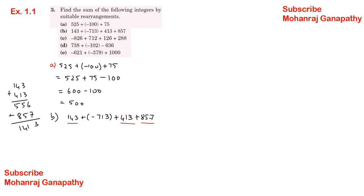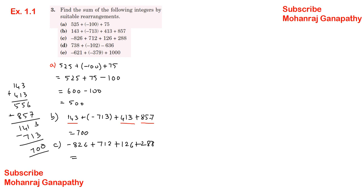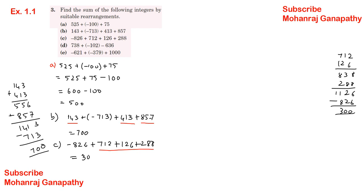Part b: minus 826 plus 712 plus 126 plus 288. Rearranging: 712 plus 126 equals 838. Then 838 minus 826 — actually 288 is also added. 712 plus 126 is 838, and 288 contributes, giving three hundred. The answer is 300.